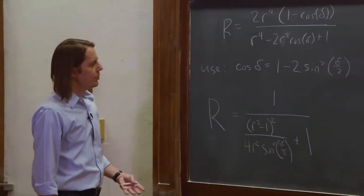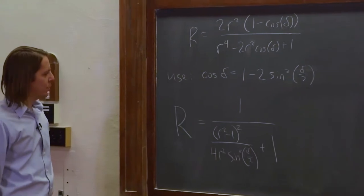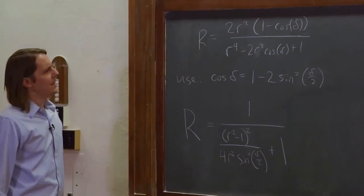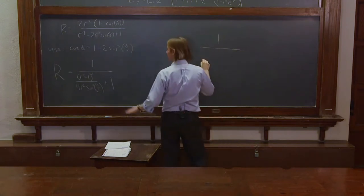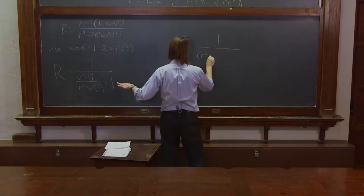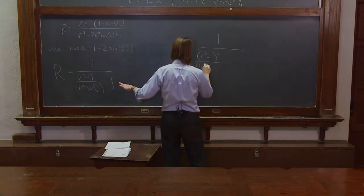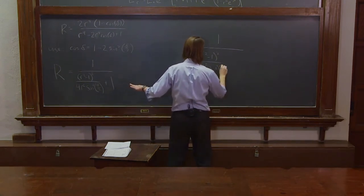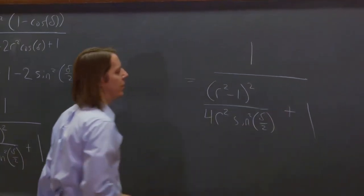And then, this is sort of useful because it can start to give you some idea of why this would make a sharp function. And to figure it out, I need to write it where I can actually get to it. So here we go, let me write it one more time. So 1 over (R² - 1)² over 4R² sine squared delta over 2. Okay. So this is always 1. This is always 1.